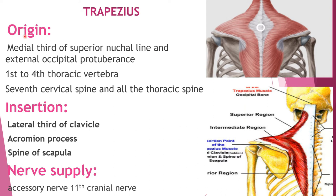The upper part originates from the medial third of the superior nuchal line and the external occipital protuberance. It inserts into the lateral third of the clavicle.